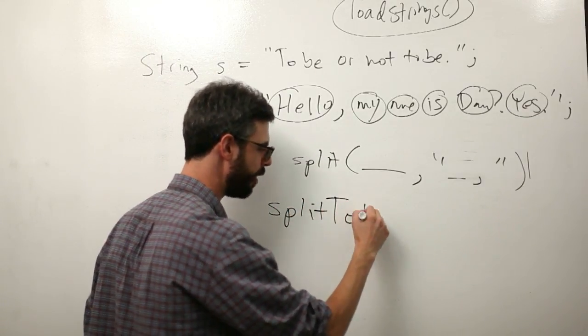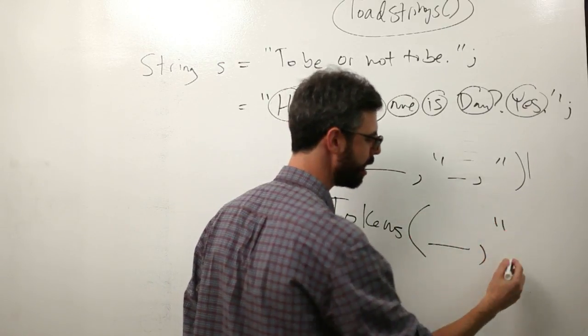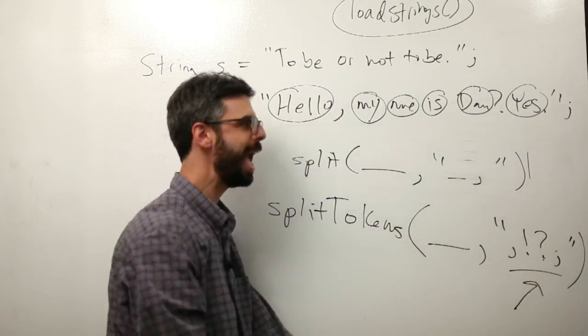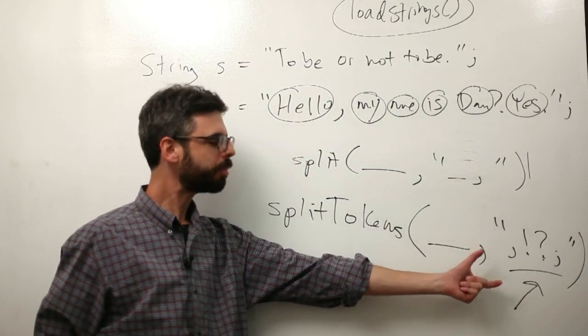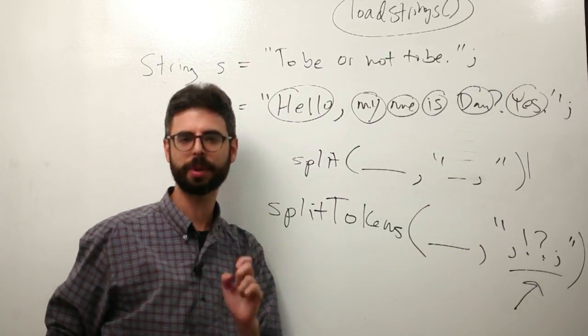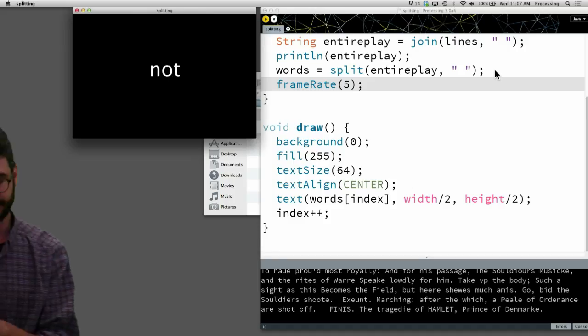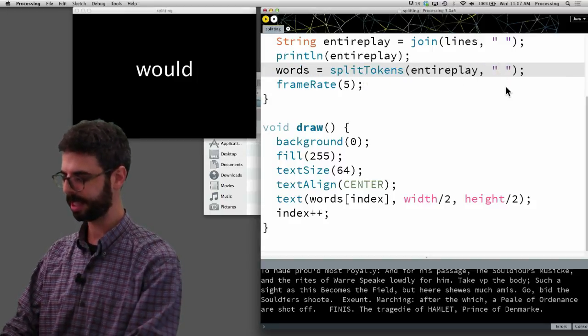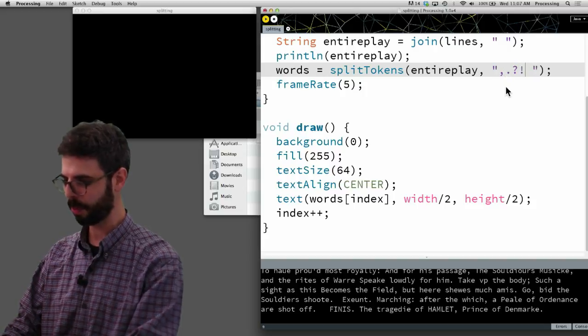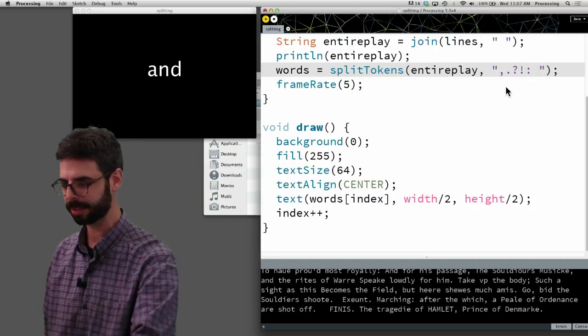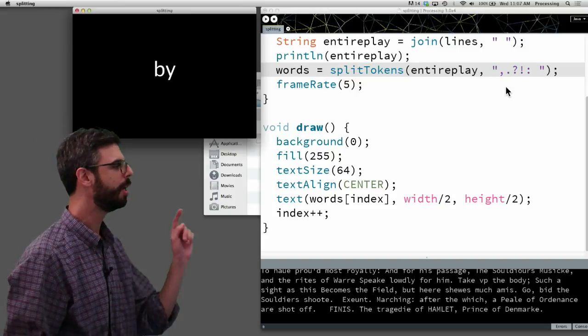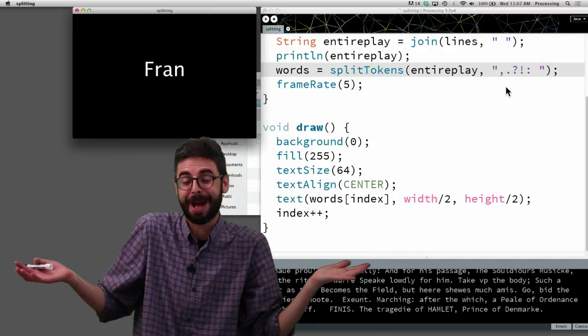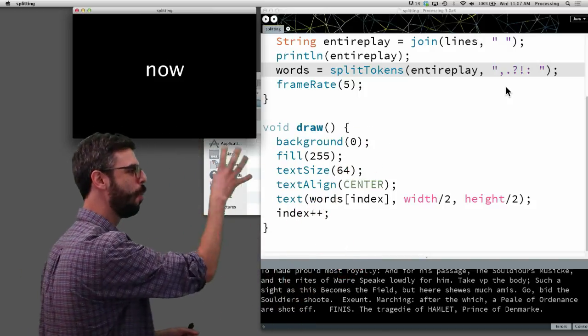And to do that, there is a function of Processing called splitTokens. And what that does is it takes any character that's here in a string, any one of these individual characters can be a delimiter. So if I come back to this particular program and I change this to splitTokens, and I say comma, period, question mark, exclamation point, colon, and the list goes on. We could come up with a lot of other possibilities. And I run this again, we can see now none of the punctuation is there.